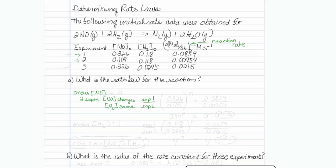So for experiment 1, I have a concentration of NO of 0.326 and a rate of 0.0859. For experiment 2, I have a different concentration of NO, I have 0.109.